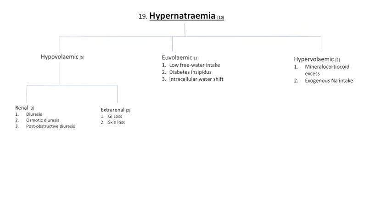Hyponatremia is generally defined as a sodium concentration below the normal range. Clinical manifestations depend on its duration and severity. Acute hyponatremia is often symptomatic, with manifestations including thirst, muscle weakness, decreased level of consciousness, delirium, convulsions, coma, and brain shrinkage, which can lead to osmotic demyelination syndrome and vascular rupture with intracranial hemorrhage.